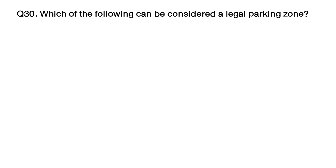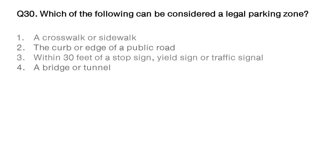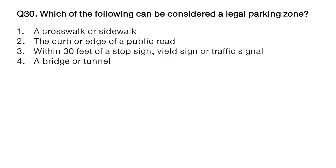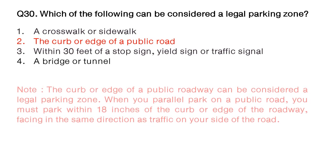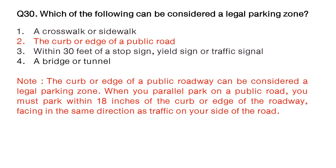Question: which of the following can be considered a legal parking zone? Option number 1: a crosswalk or sidewalk. Option number 2: the curb or edge of a public road. Option number 3: within 30 feet of a stop sign, yield sign, or traffic signal. Option number 4: a bridge or tunnel. The answer is option number 2: the curb or edge of a public road. Note: the curb or edge of a public roadway can be considered a legal parking zone. When you parallel park on a public road, you must park within 18 inches of the curb or edge of the roadway, facing in the same direction as traffic on your side of the road.